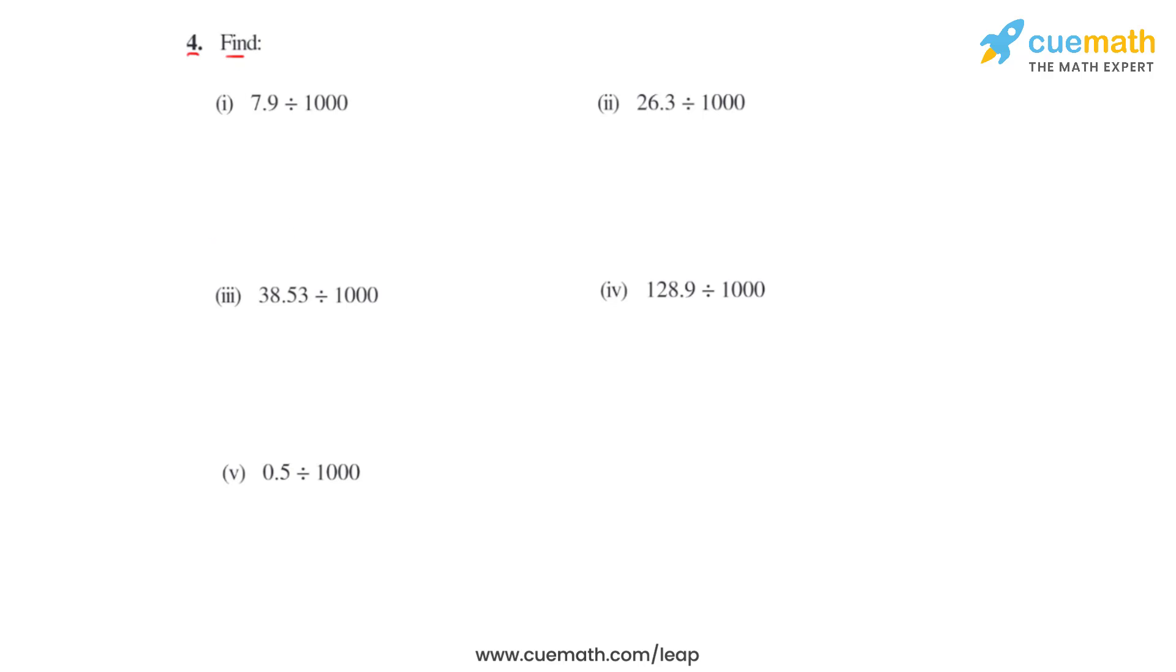So starting with the first bit, we have 7.9 which is divided by 1000 and there are 3 zeros in 1000. So the decimal moves 3 places towards right. As there is no digit before 7, we will be filling that with zeros. So the answer for this becomes 0.0079.